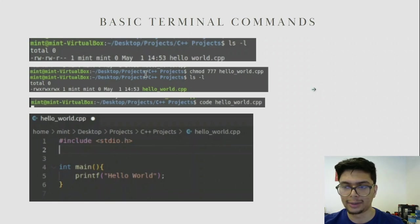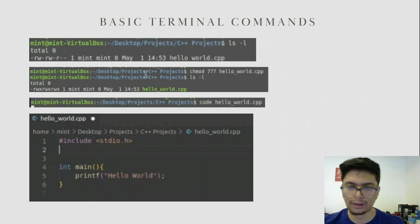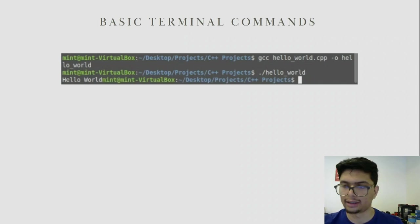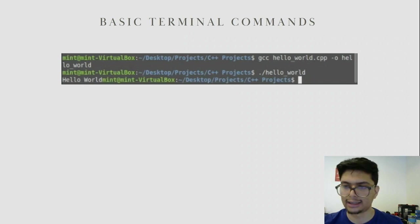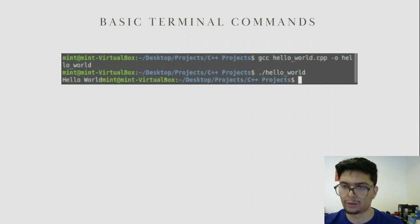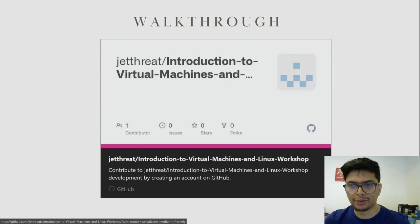Once that's done, we can type the command: code hello-world.cpp to open it in VS Code and begin coding. Below is a simple Hello World file in C++. To run this file, we use the gcc compiler. The command is: gcc hello-world.cpp -o hello-world. This creates an executable. Then type ./hello-world, and the dot-slash executes the executable created by the compiler. We'll now use these commands in a C++ project to show you how to create and execute a program.